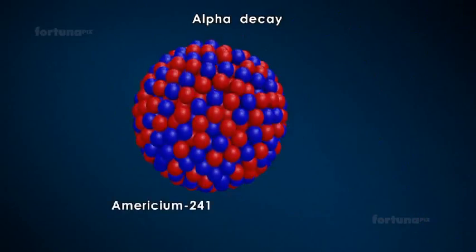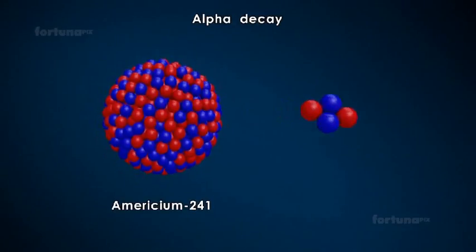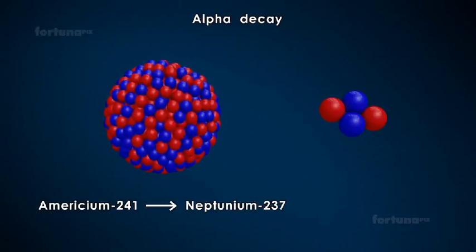Americium-241, for example, will undergo alpha decay and form neptunium-237.